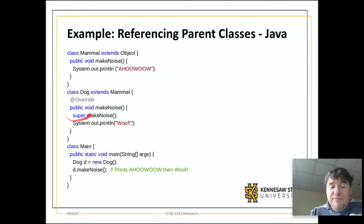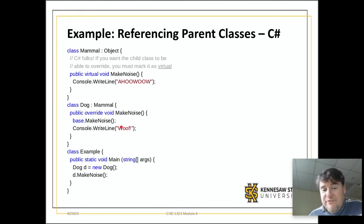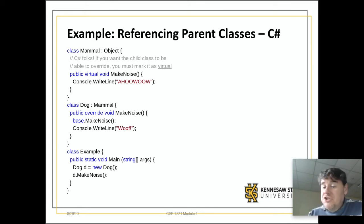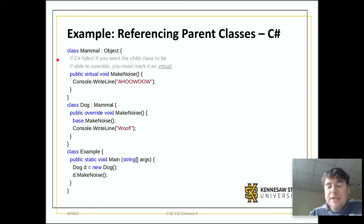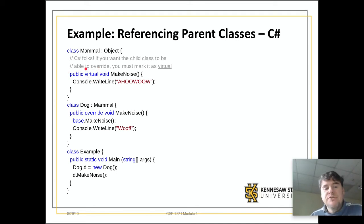This is the syntax in Java: super, then you call the method. In C# it is base, then you call the method—very similar. There is a gotcha in C# you should be aware of: in C#, if you want to be able to override a method, you must mark the method as virtual in the parent class.